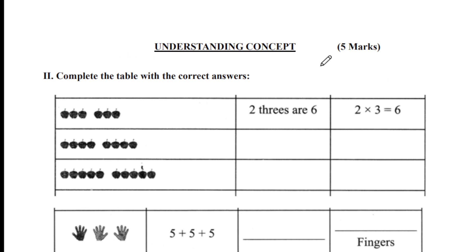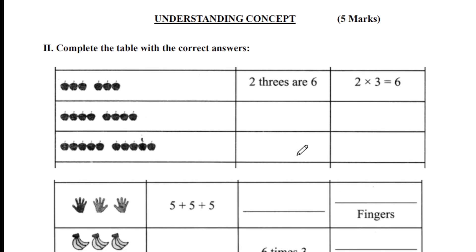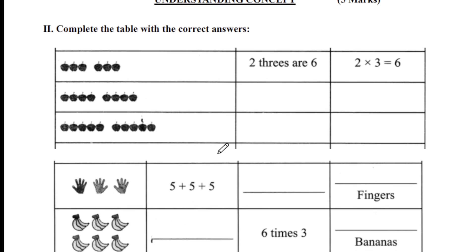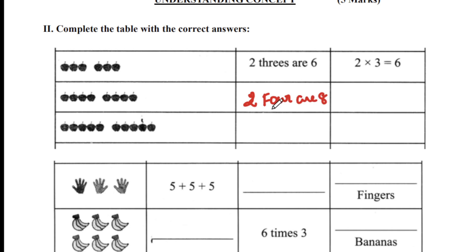The next section is Understanding the Concept, and again you're going to score five marks. Complete the table with the correct answer. There is a sample given here: two times three are six. So two into four is equal to eight. That's an easy one.